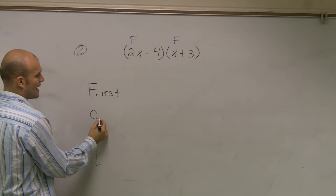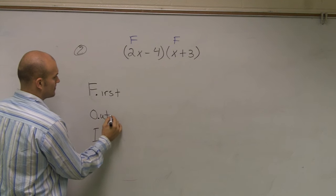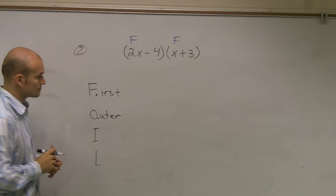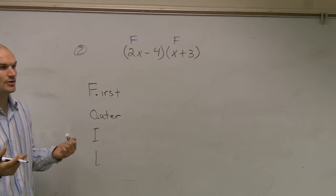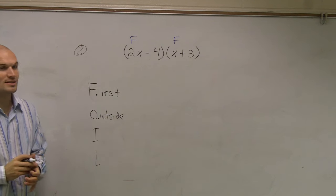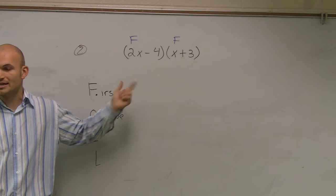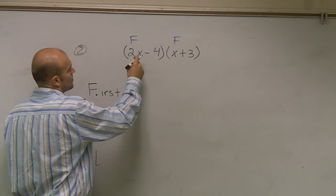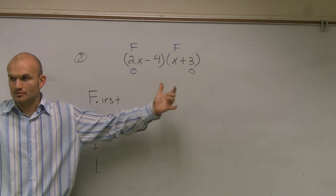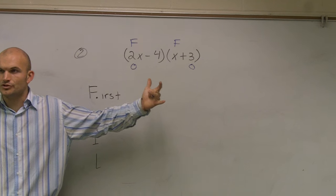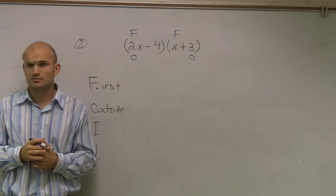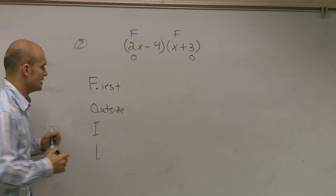The next one is for outer or outside. For the outer, I just want to call it outside. I think outside is better. I don't like outer. Outside are the two numbers that are on the outside of your binomial. See how those are kind of like the outside? They're on the outer edges of your two binomials. So that's why we call these O and O.